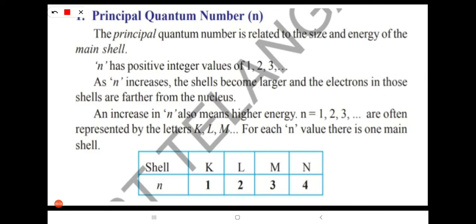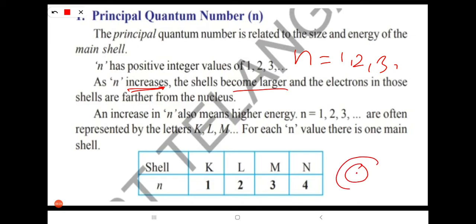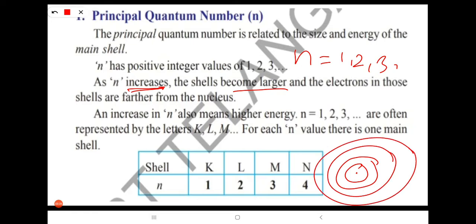N also indicates the radius and energy of the orbit. As N increases — 1, 2, 3, 4, 5 — the shells become larger, and the electrons in those shells are farther from the nucleus. In the last shell, electrons are very far from the nucleus.